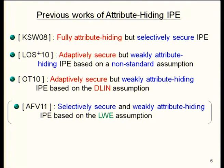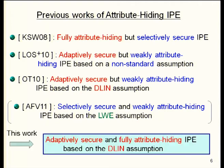So, constructing inner product encryption with both nice security properties — adaptively secure and fully attribute-hiding — is an open problem. This work addresses that problem and constructs an adaptively secure and fully attribute-hiding inner product encryption from the standard pairing assumption, specifically the decisional linear assumption.